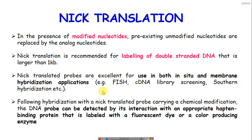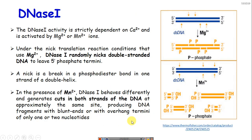Following hybridization with nick-translated probes, chemically modified probes can be detected by using enzyme systems, direct observation of fluorescence, measurement of chemiluminescence, or fluorescent dyes. Both direct and indirect detection systems are available to detect the interaction of the probe and the target.